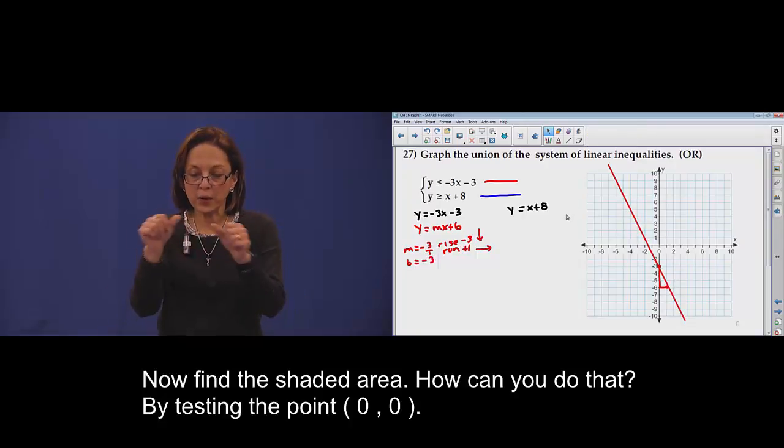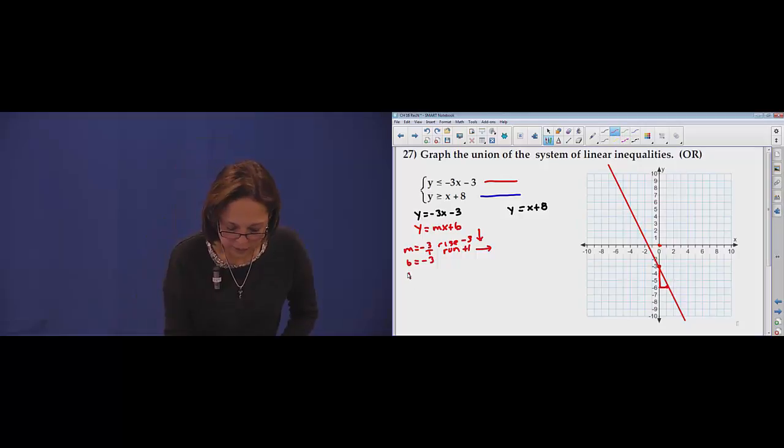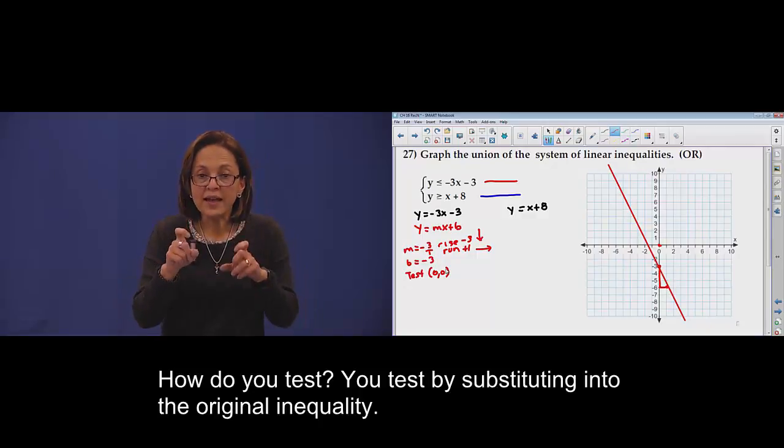Now find the shadow area. How? Test the point. Which one? 0, 0. Where? Test on the original inequality.